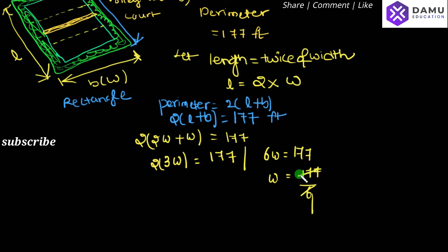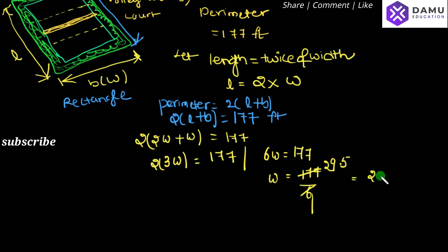So W will be equal to 177 divided by 6. Calculating: 6 ones are 6, 6 twos are 12, remainder 5, and 9 sixes are 54, giving us 29.5. So the width will be equal to 29.5 feet.